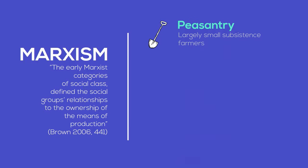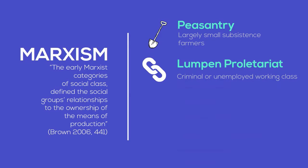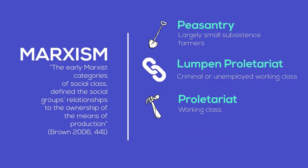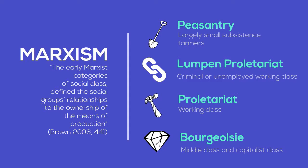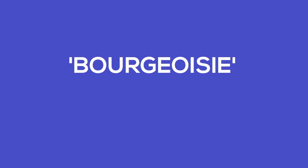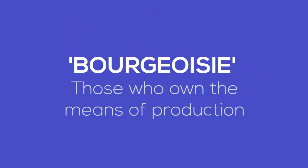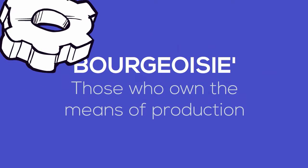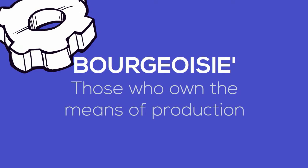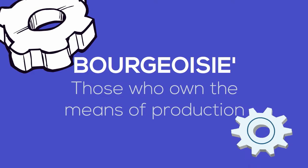The key categories were: peasantry; the lumpen proletariat, which are the unemployed and criminal strata; the proletariat, or employed working class; the petite bourgeoisie, the middle class; and the bourgeoisie, the capitalist class. The relationships were defined by exploitation under capitalism, a process whereby the bourgeoisie benefited from the surplus created by the proletariat.